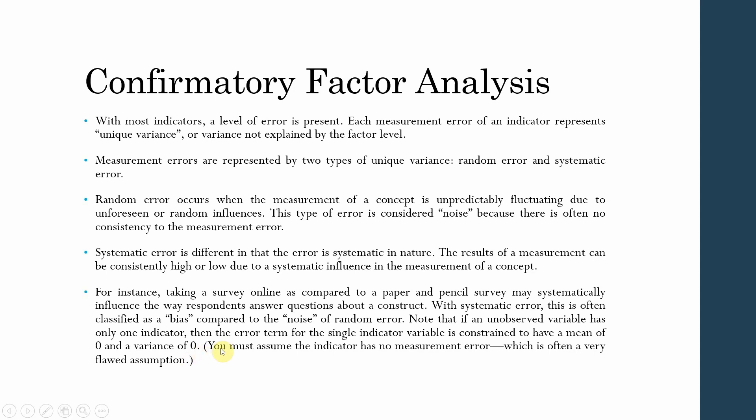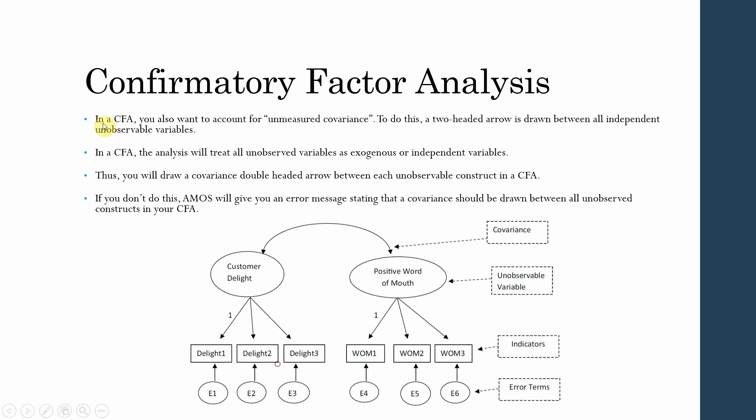You must assume the indicator has no measurement error, which is often a very flawed assumption. That's why you need to have multiple items measuring the unobservable construct.